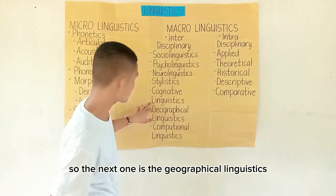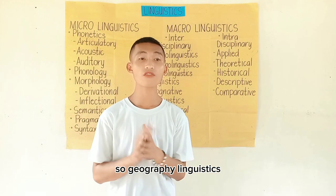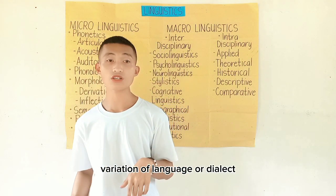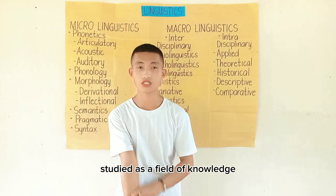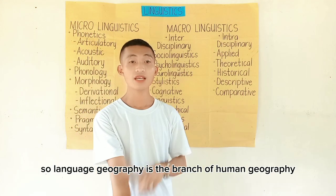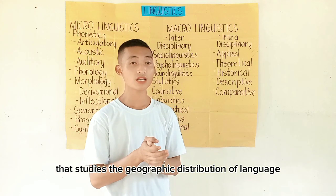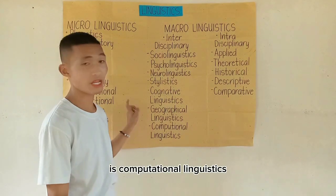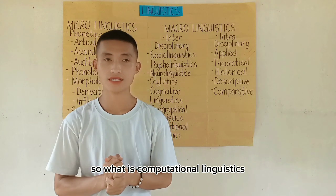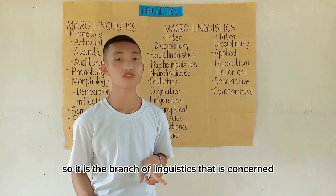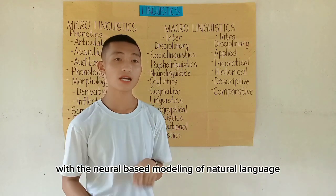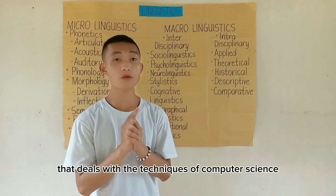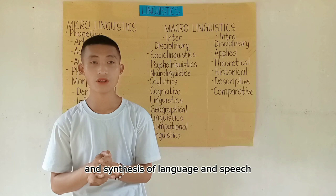Geographical linguistics, also called dialect geography, is the study of local or regional variation of language or dialect as a field of knowledge. Language geography is the branch of human geography that studies the geographic distribution of language. The last interdisciplinary branch is computational linguistics, which is concerned with rule-based modeling of natural language from a computational perspective, applying techniques of computer science to the analysis and synthesis of language and speech.